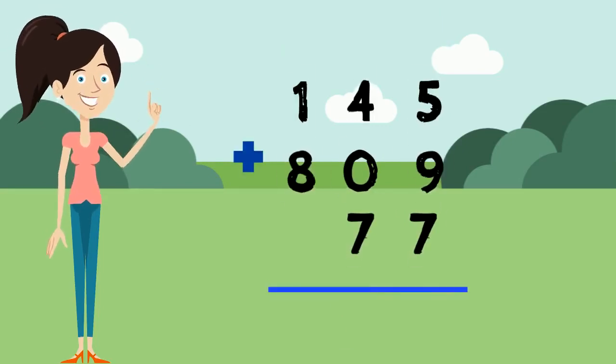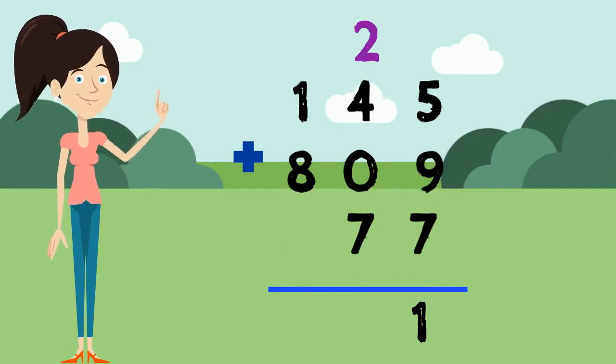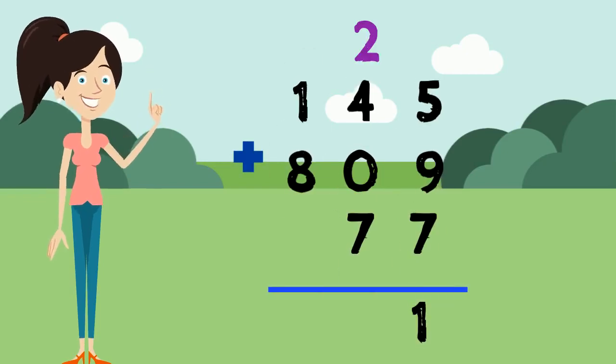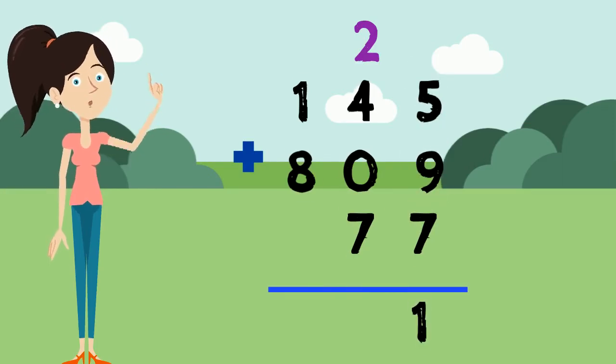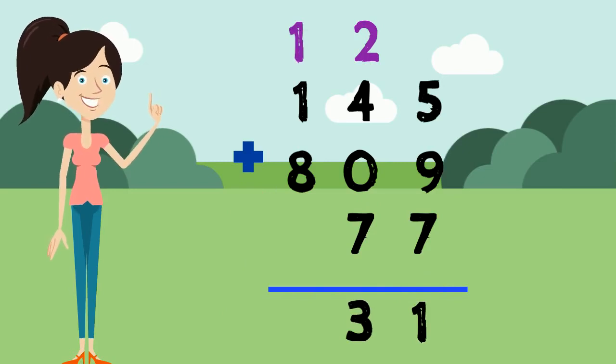Because the answer to these 3 numbers is 2 digits, we carry the first digit to the next column, which is like moving a group of 20 over and leaving the 1 behind in one's place. Now we add the next column, and now we have 4 numbers in this column that we need to add. So 2 plus 4 plus 0 plus 7 equals 13. Yes, that's another 2-digit answer. So we carry the 1 and leave the 3 in the ten's place.